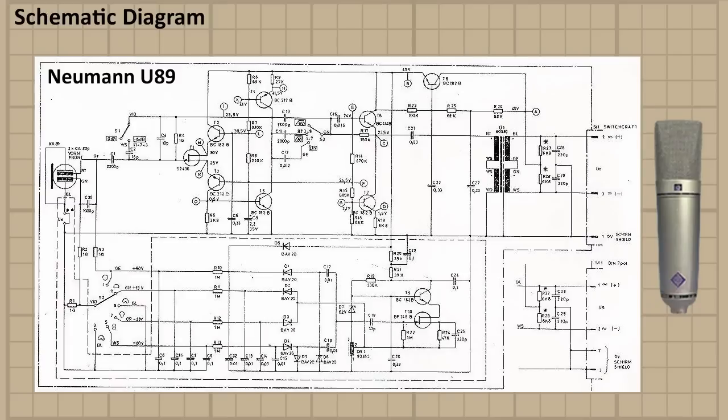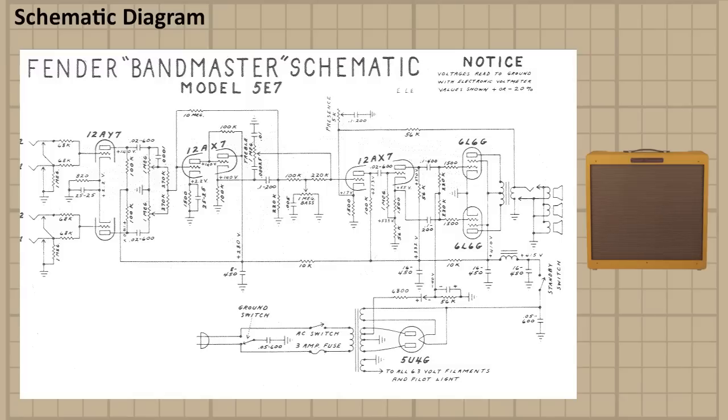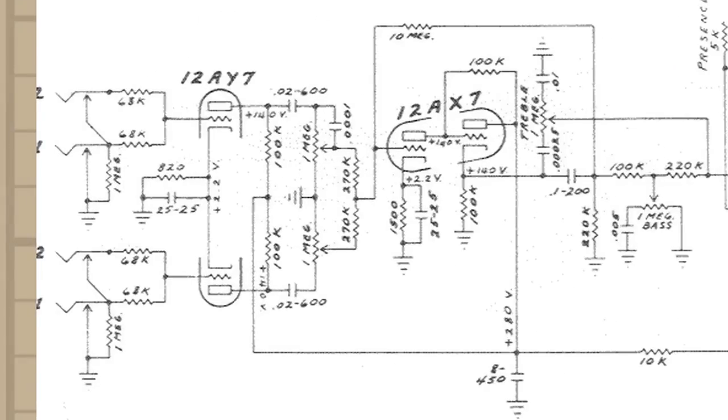Let's take a look at another example of a schematic diagram. Now, this diagram is for a Fender Bandmaster Model 5E7, a guitar amplifier. And as you can see, the input side is over here on the left. This is where the guitar would actually be plugged into the amplifier. And you can follow the signal through all the electronics. You can see all the different values.